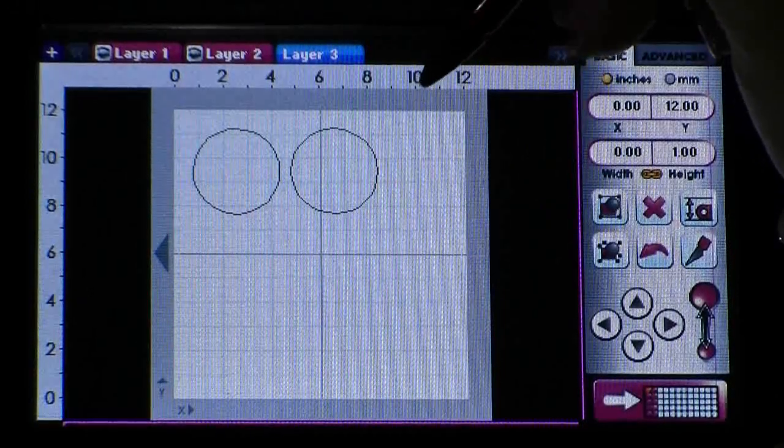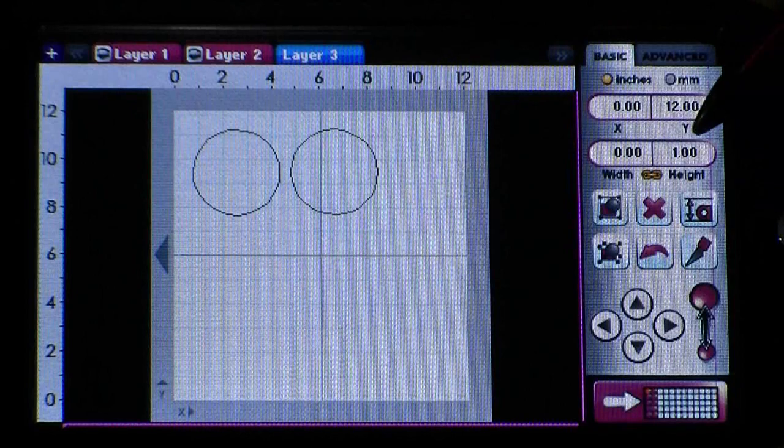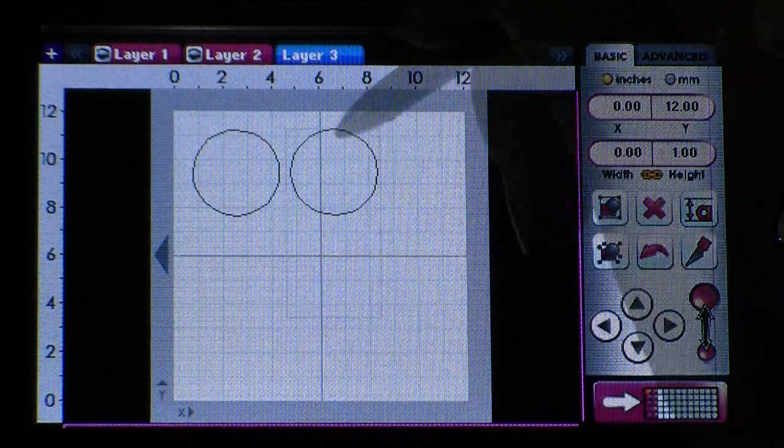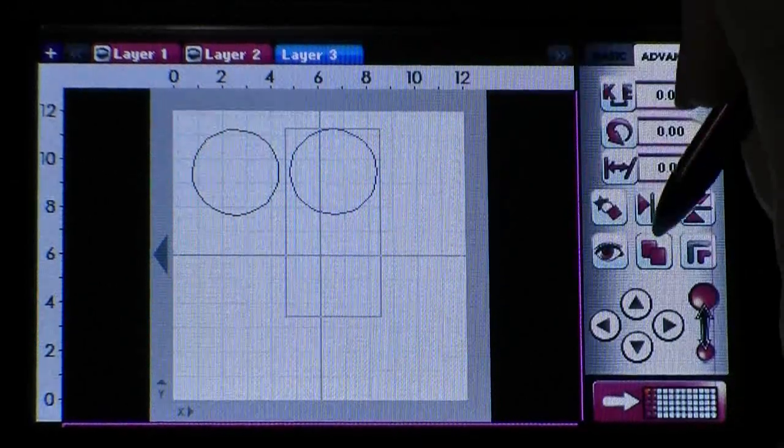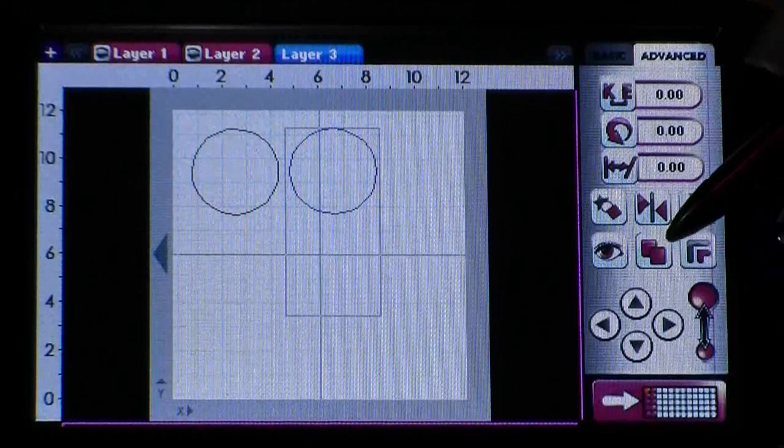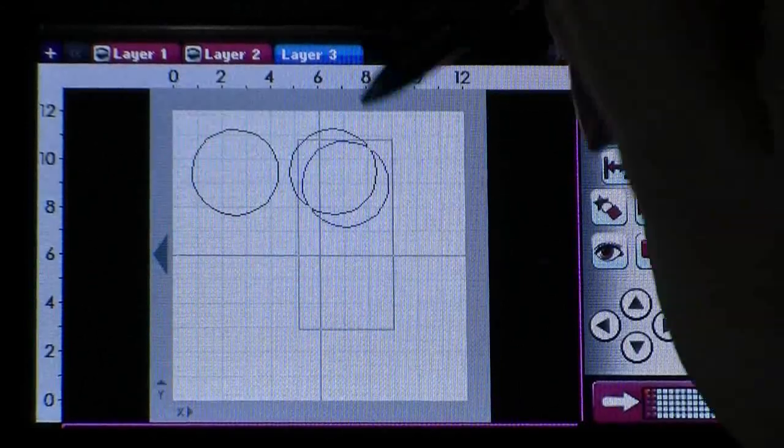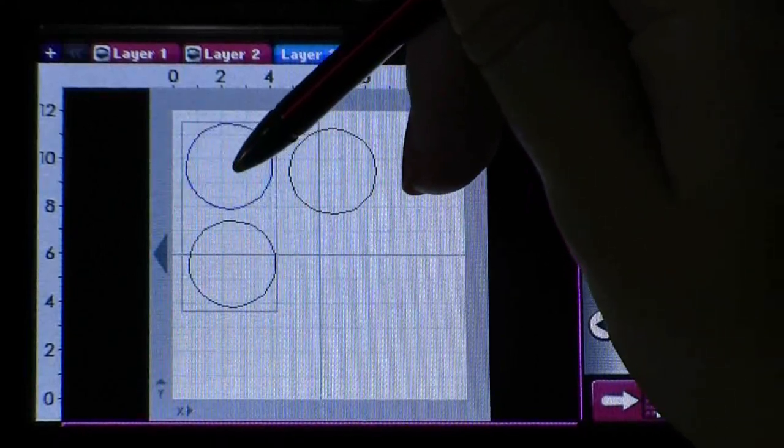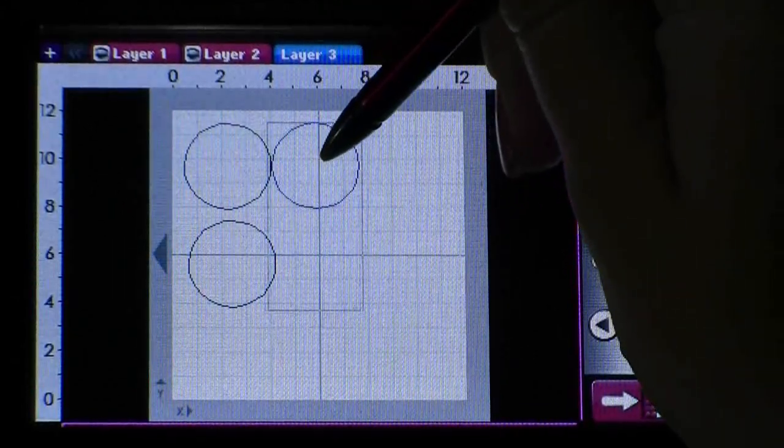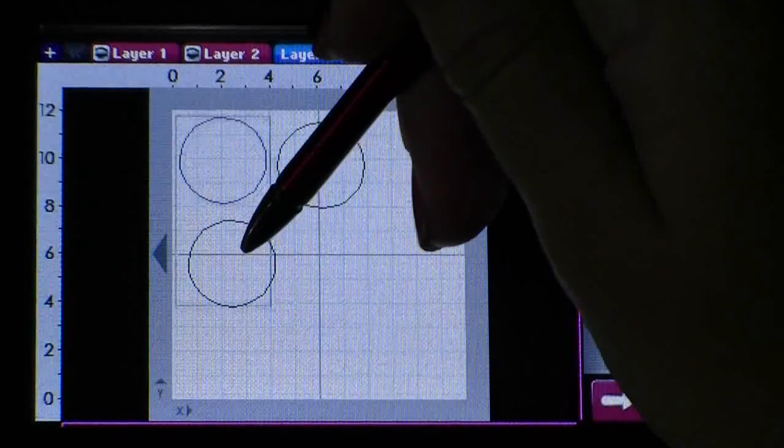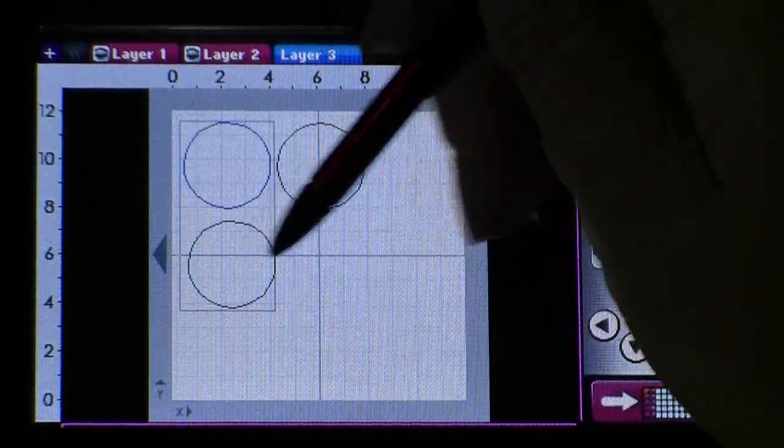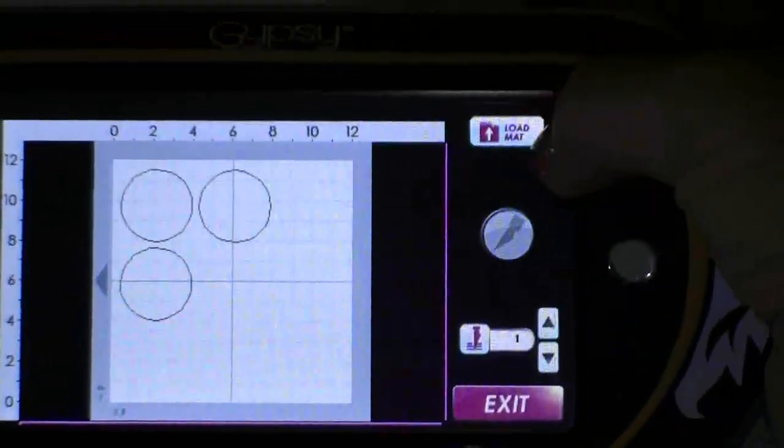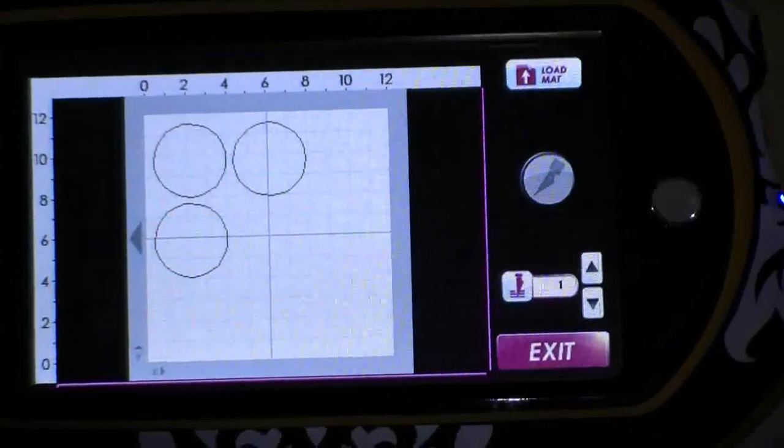Very simple, two circles. I actually need to add one more, so I'm going to click one of the circles and just to make it fast, I'm going to click this button right here and that will duplicate the circle. Then I'm just going to lay the circles out so that they can cut out on my 12 by 12 sheet of paper. Now I just need to press the load mat button.